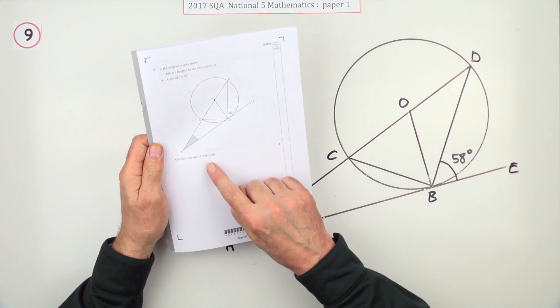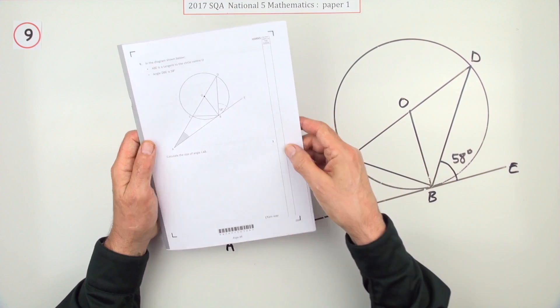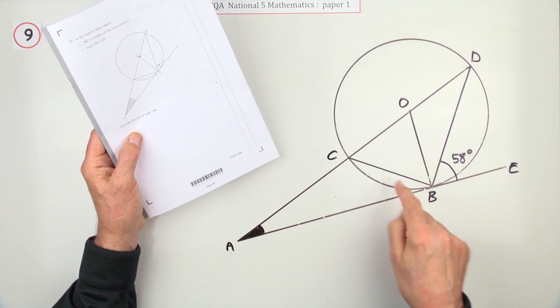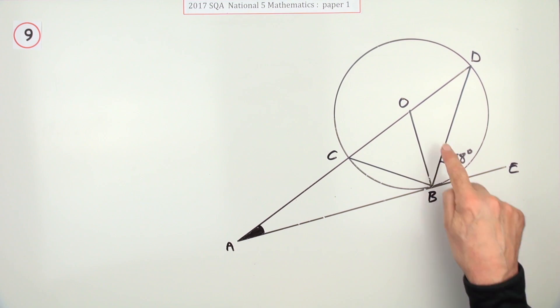Number 9. Here's the circle question. Full of lines, full of triangles. Calculate the size of this shaded angle CAB for three marks.